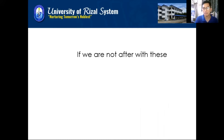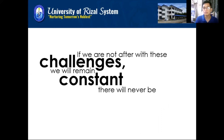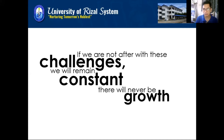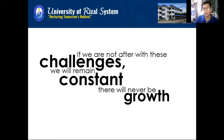If we are not after these challenges, we will remain constant. If we just settle on what we have in our country, we will remain stagnant. We have to expand — we have to think global — and think of what we can do in order to create more development. That is what our government is doing. They are tying up with European nations and neighboring countries like China, Japan, and Korea. This is the way our government achieves growth and development. When they engage in international trading, it is already a manifestation of globalization.